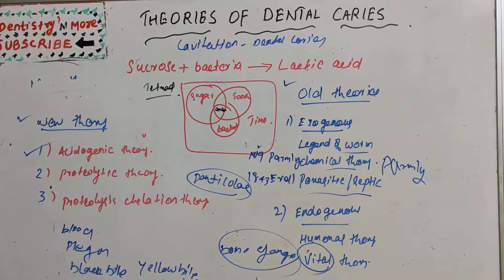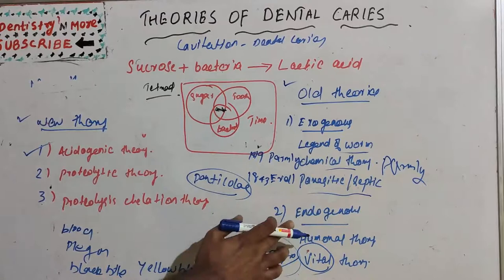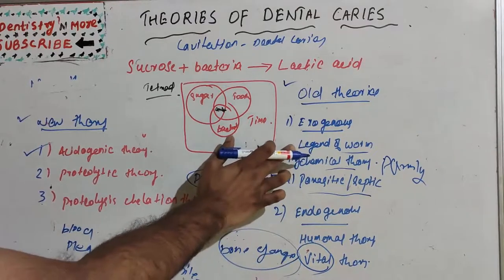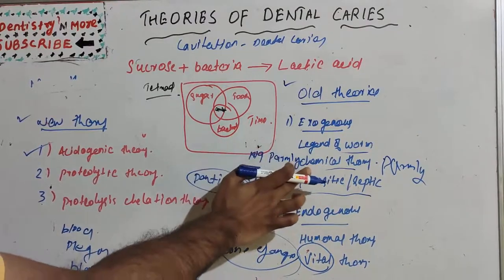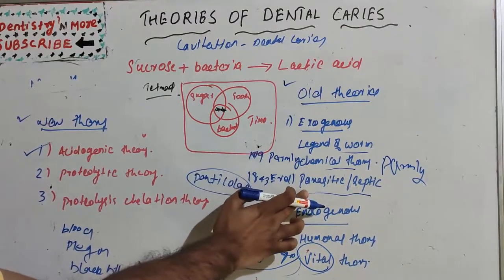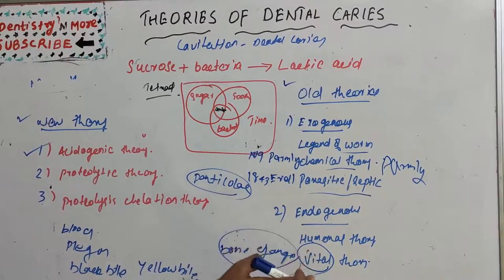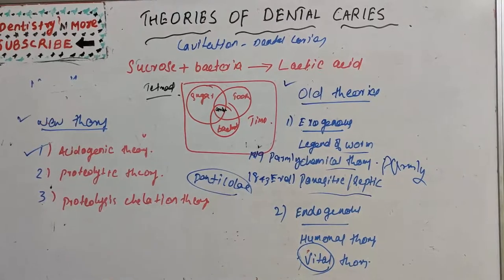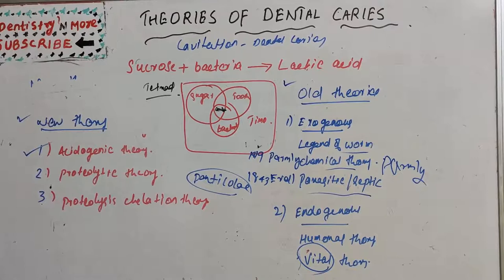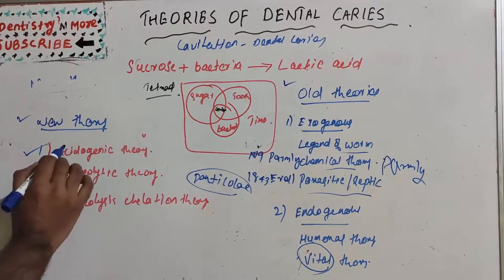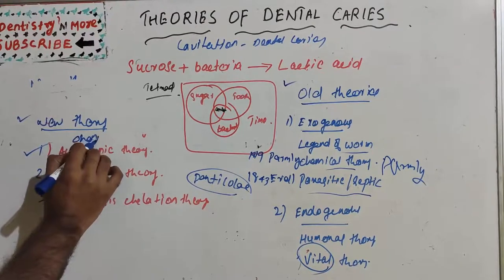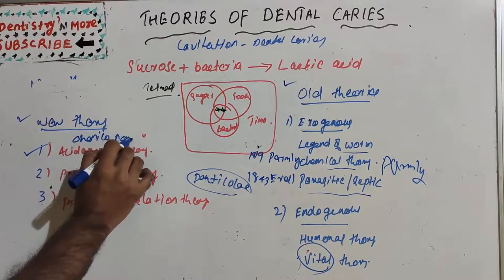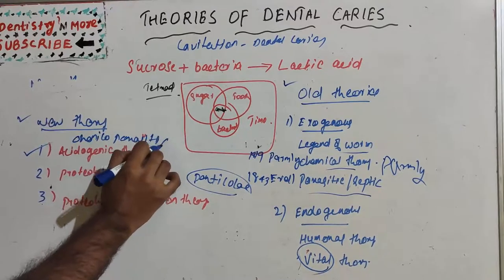So we have learned about the old theories — exogenous and endogenous. The exogenous were the legend of worm, chemical theory, and parasitic or septic theory; then the humoral theory and vital theory. Now let's move on to the new theories of dental caries. The first new theory is the acidogenic or chemical parasitic theory, which is the most commonly accepted theory.